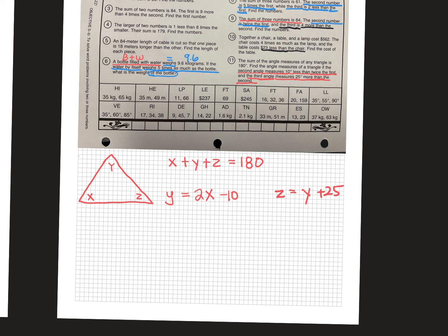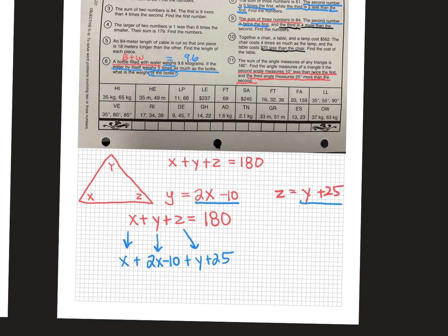So I start with X plus Y plus Z equals 180. I take the Y out and replace it with 2X minus 10. Then for Z, it becomes Y plus 25, but I need one letter — so that Y becomes 2X minus 10 again. That leaves us with X plus 2X minus 10 plus 2X minus 10 plus 25 equals 180.